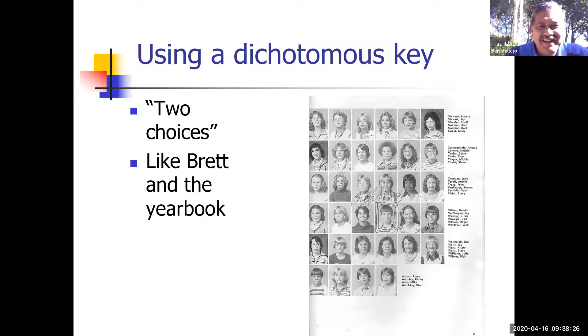The point is you keep going and you keep going and it keeps telling you where to go until finally you get to the end. And the end is the chess club, or for a dichotomous key, the end is a name.